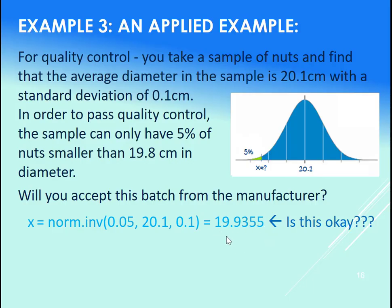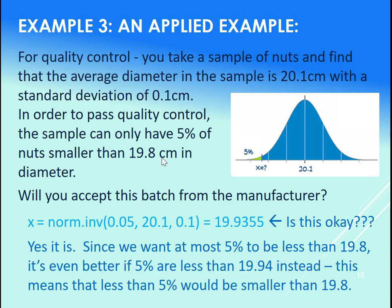So is that value okay? It's larger than 19.8. Is that good or bad? It's actually good. Let's look at it in terms of the picture here. So our x value turns out to be 19.94 such that 5% is less than that. What that gives us is that less than 5% of the nuts will be less than 19.8 then.